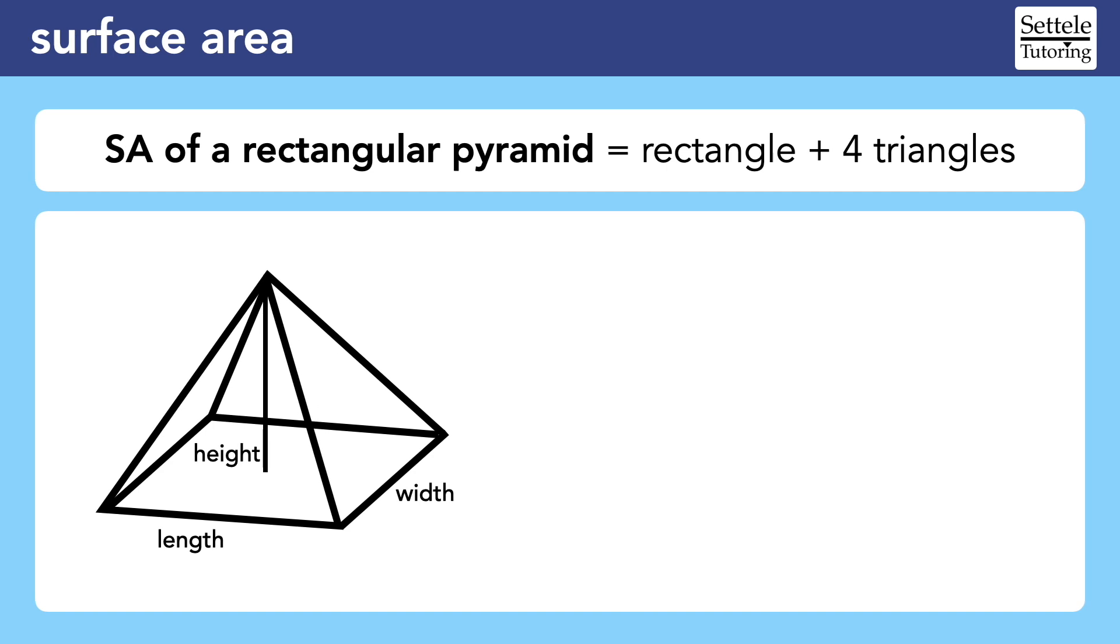A rectangular pyramid is really just a rectangle and four triangles. The rectangle is easy to spot. Its dimensions are the length and the width, so its area is the length times the width.